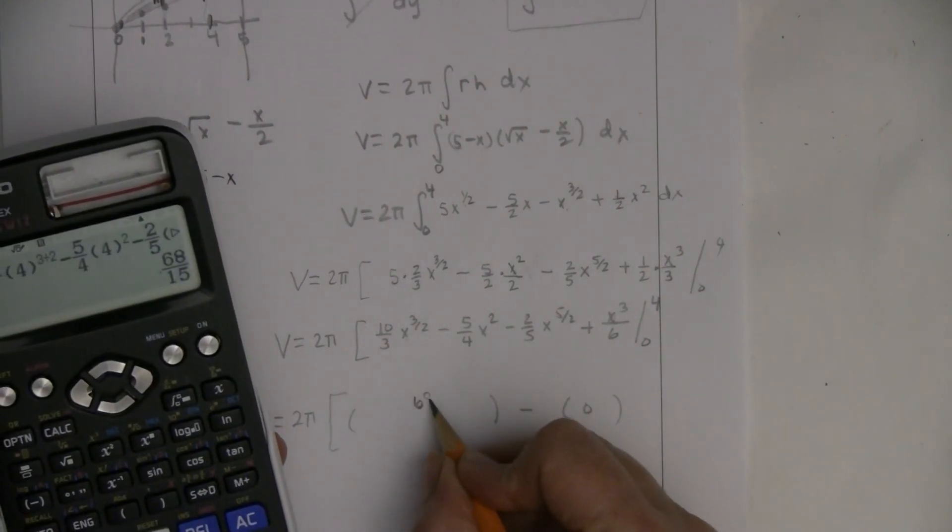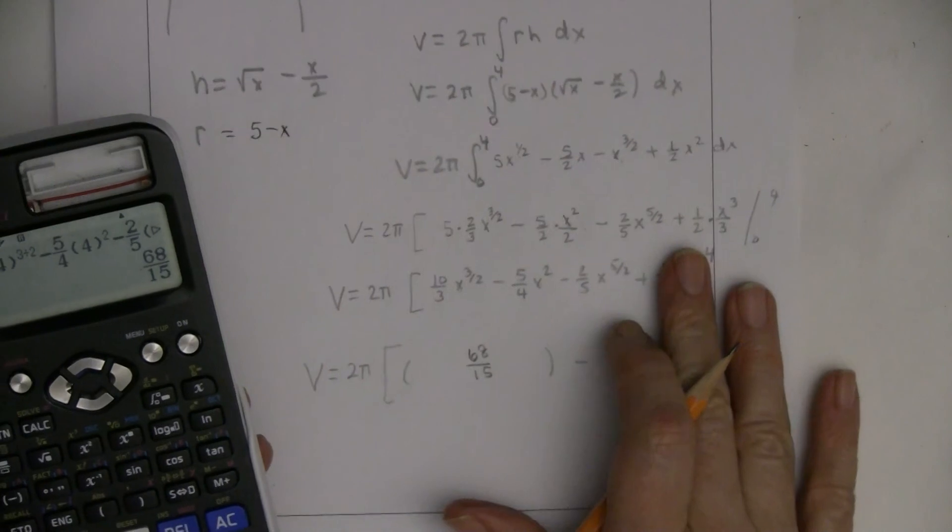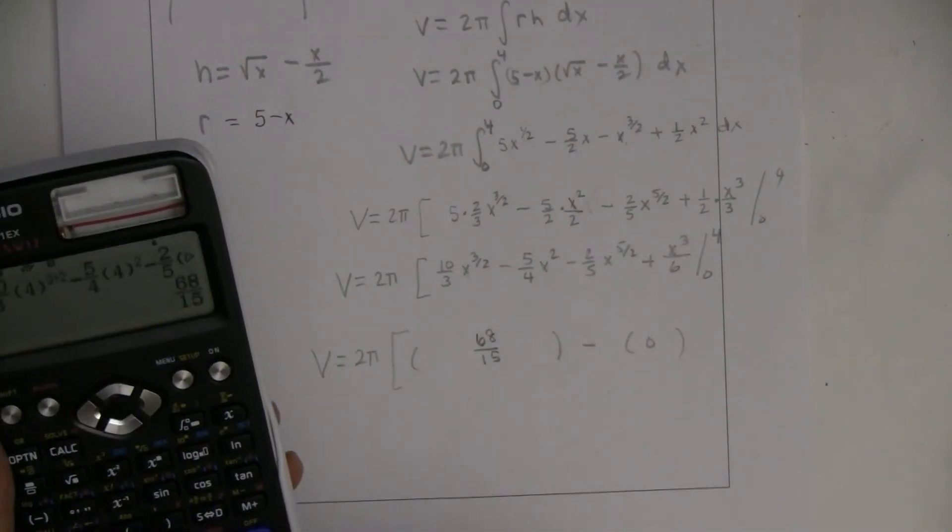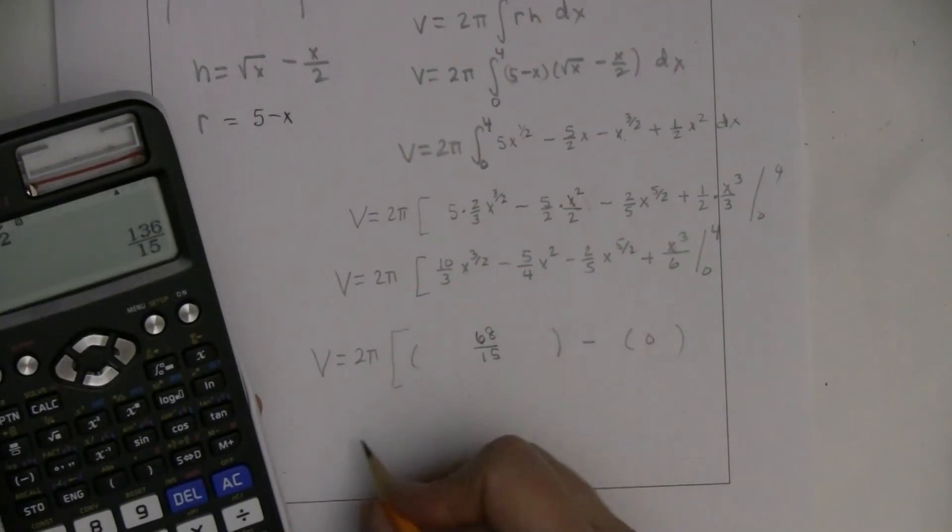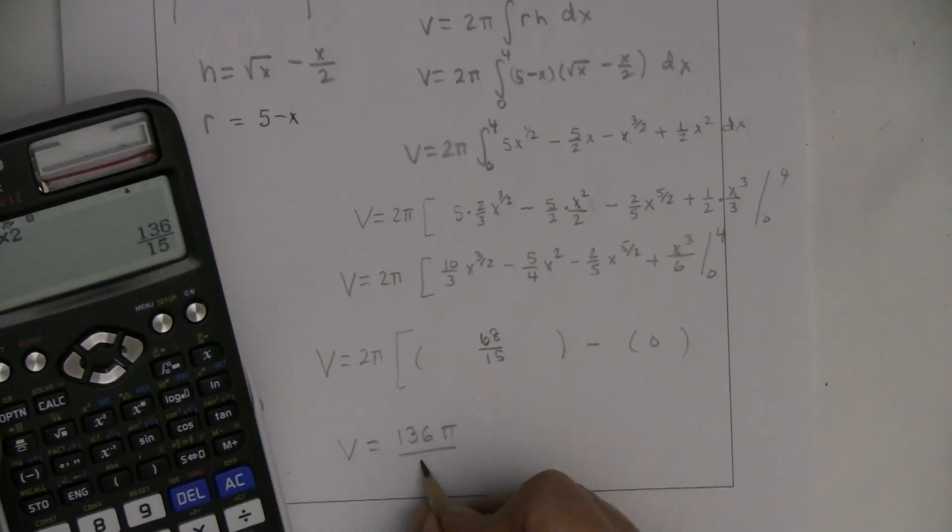So that's 68 over 15, minus 0, and then times 2π. So times 2. So the volume here is 136π over 15.